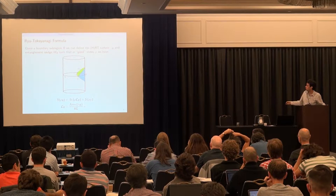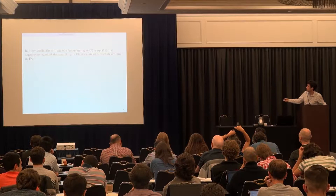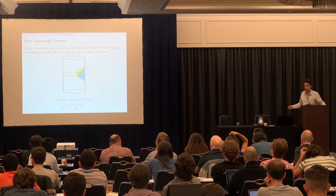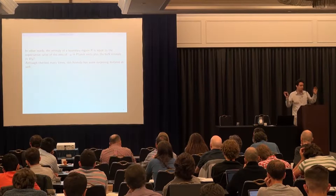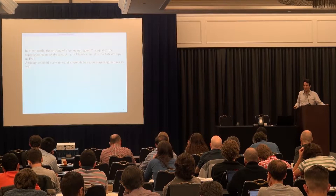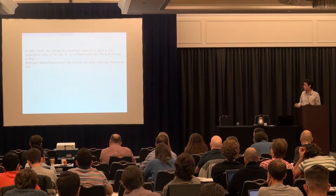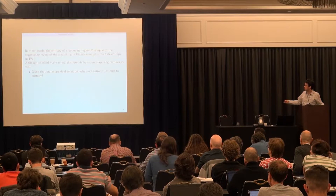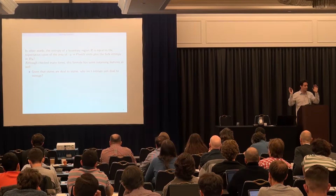Let me reiterate: given a boundary region R, its entropy is the expectation value of this minimal area surface, plus the bulk entropy between the minimal surface and the boundary region R. This formula has been around for 10 years, and it's almost certainly correct, but a couple of features bothered me. Given that states are dual to states, why isn't entropy dual to entropy? Why do we have this funny extra term?